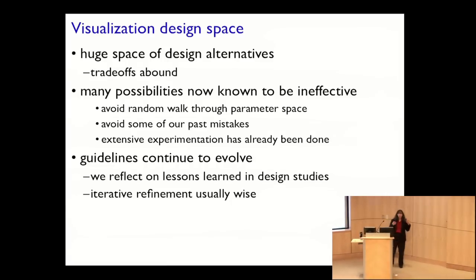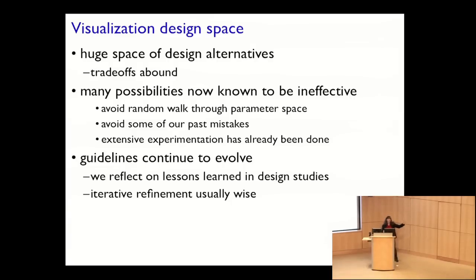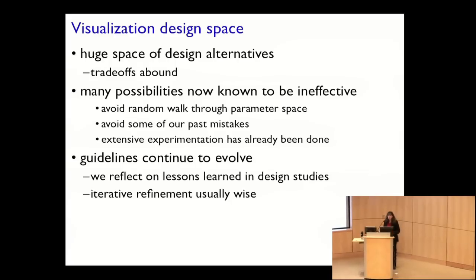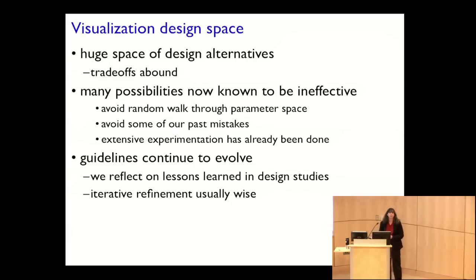There is a huge space of alternatives in the design space of visualization. Tradeoffs abound — you can't completely optimize for everything. The good and bad news is that many possibilities in that design space are known to be ineffective: they mislead and confuse rather than enlighten. You want to avoid a random walk through the parameter space of design possibilities — it is literally an exponential space. I hope to help you avoid past mistakes of the InfoViz community; we had a youthful enthusiasm phase where we tried a lot of things, and only some worked.